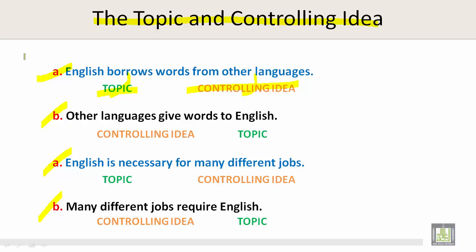Let's look at sentence A: 'English borrows words from other languages.' Here we have the topic and here we have the controlling idea. Let's look at B: 'Other languages give words to English.' Here we have the controlling idea and here we have the topic. For another example, sentence A: 'English is necessary for many different jobs' — topic and controlling idea. And B: 'Many different jobs require English' — controlling idea and topic.